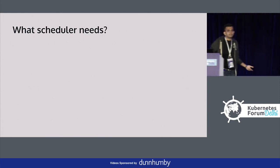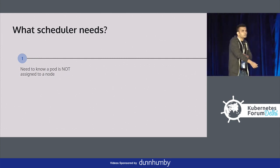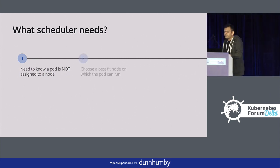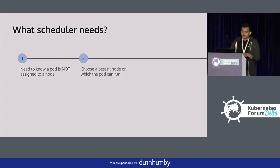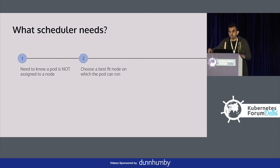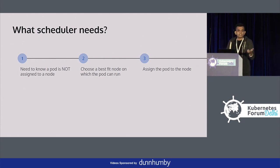What exactly does the scheduler need to run? Number one, it has to know whenever a new pod has come up. Next, it has to figure out which is the best node on which the pod can run. And finally, once it has figured that out, it has to assign the pod to the node. We will go into each of these things and how they work.